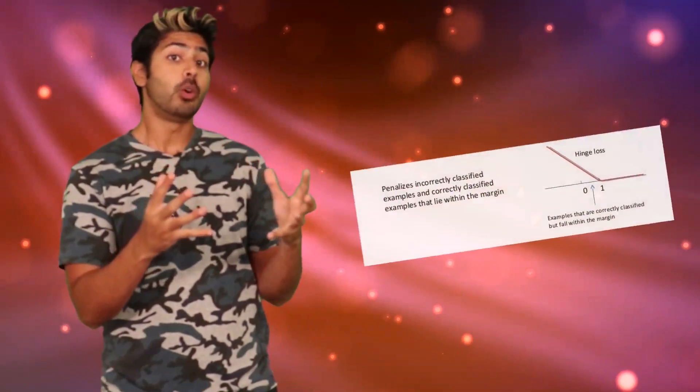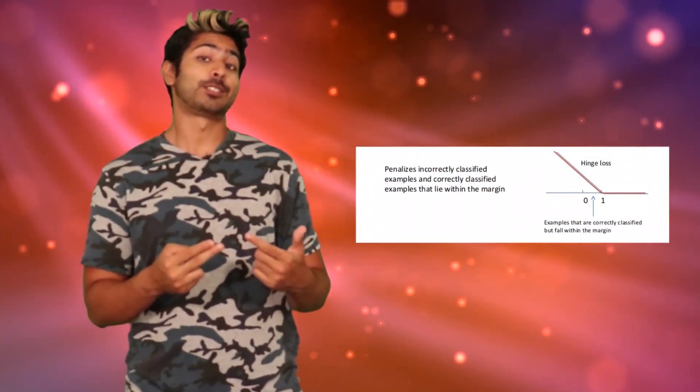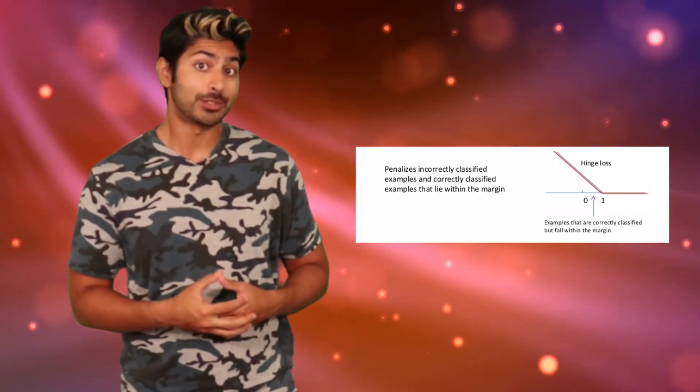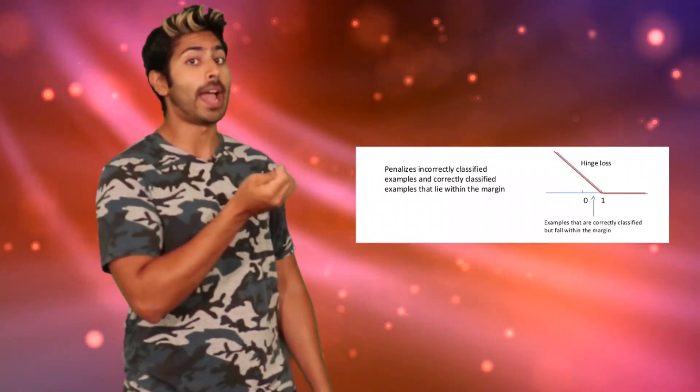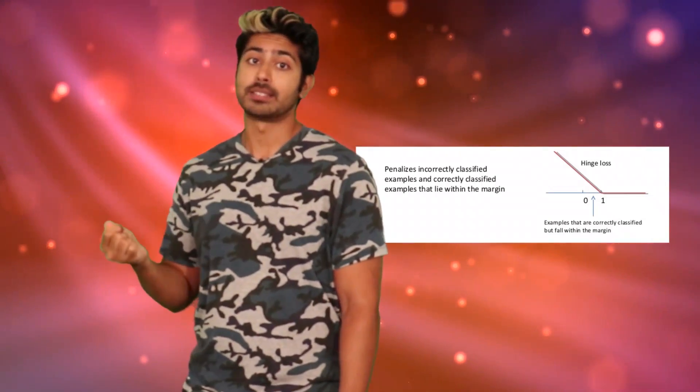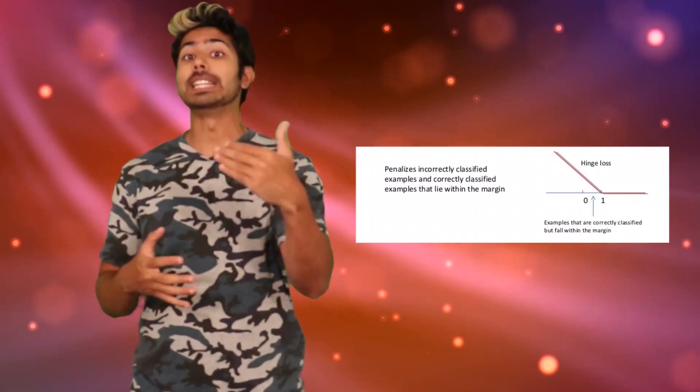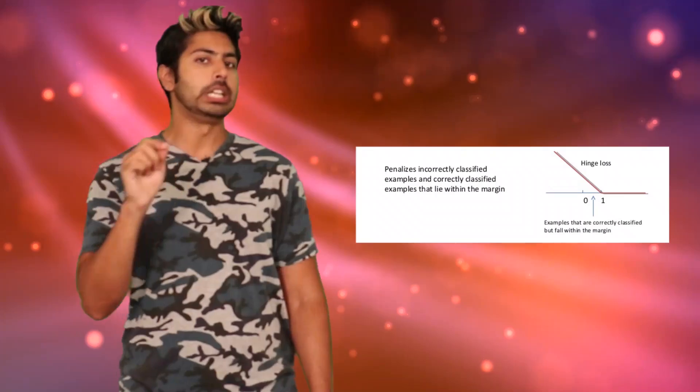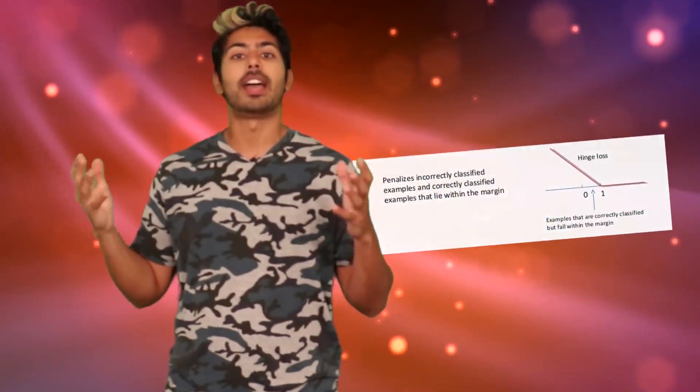There's also another commonly used type of loss function in classification tasks called the hinge loss, usually in support vector machines. It penalizes predictions not only when they are incorrect, but even when they are correct but not confident. It penalizes predictions that are really off in a big way, those that are just slightly off a little less, but confidently correct predictions are not penalized at all.